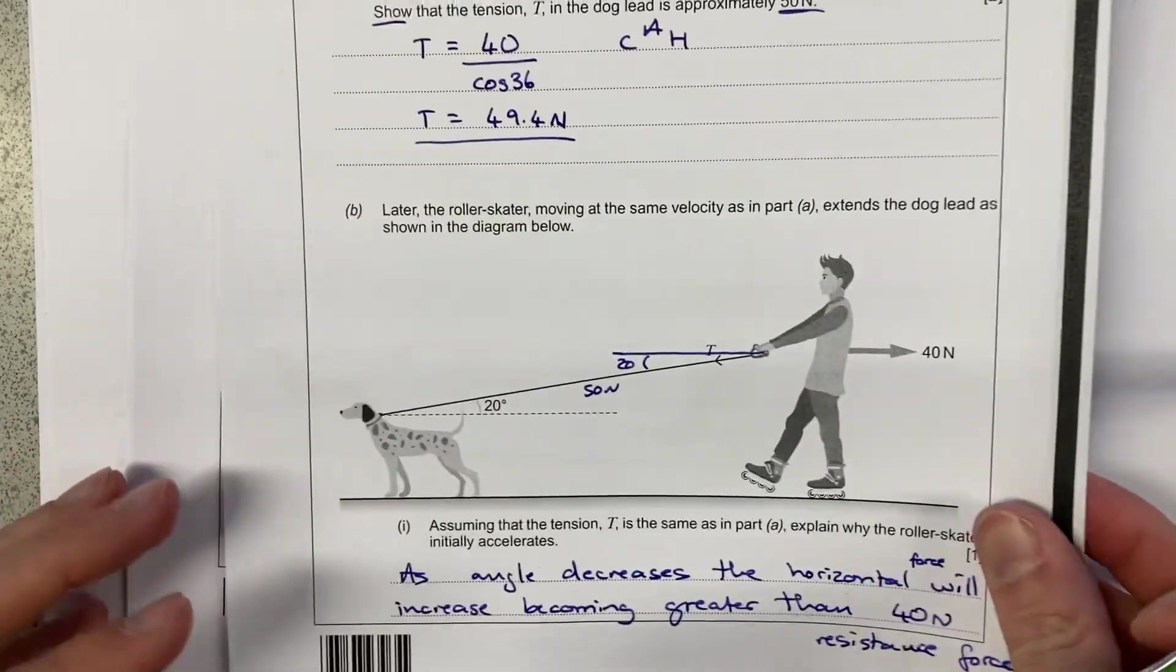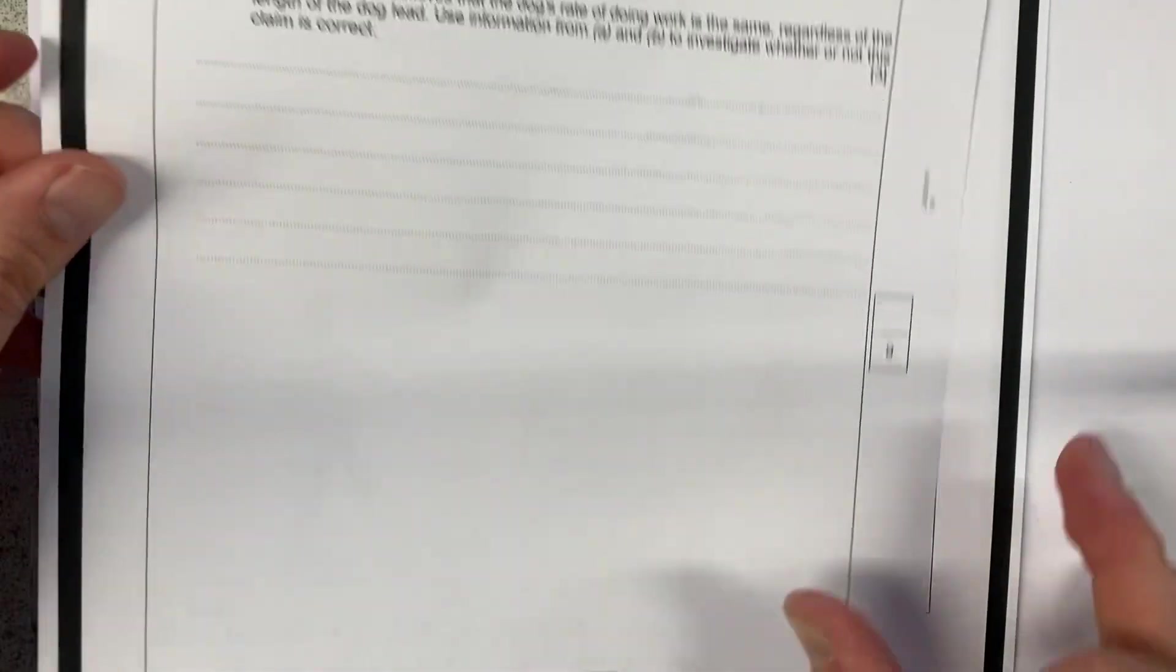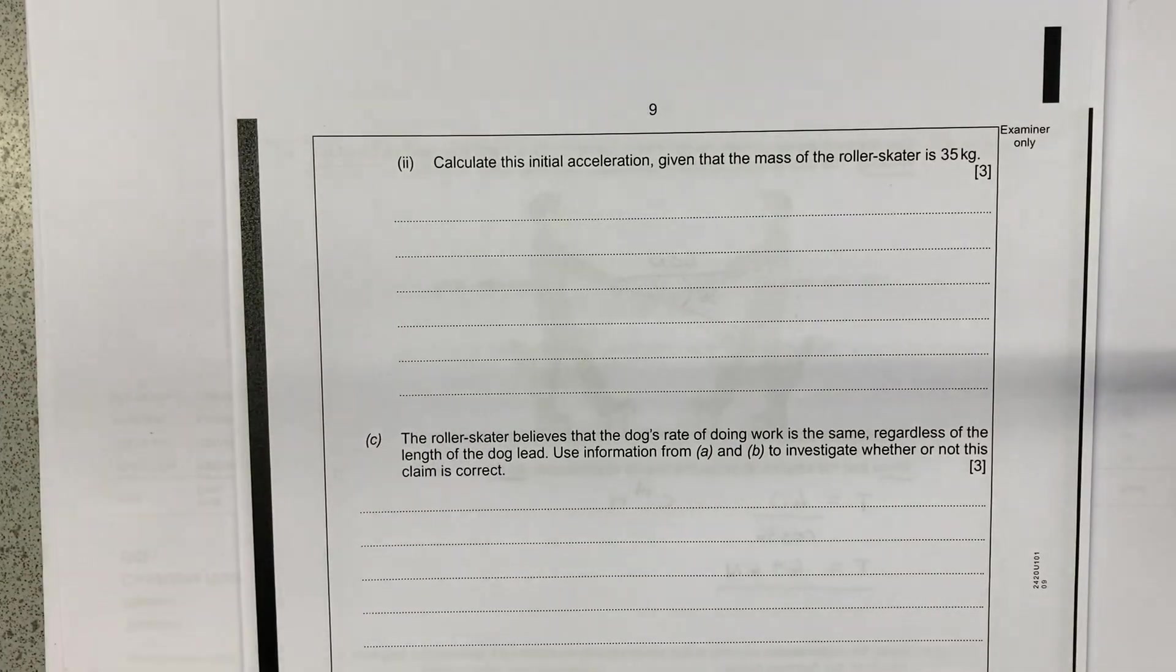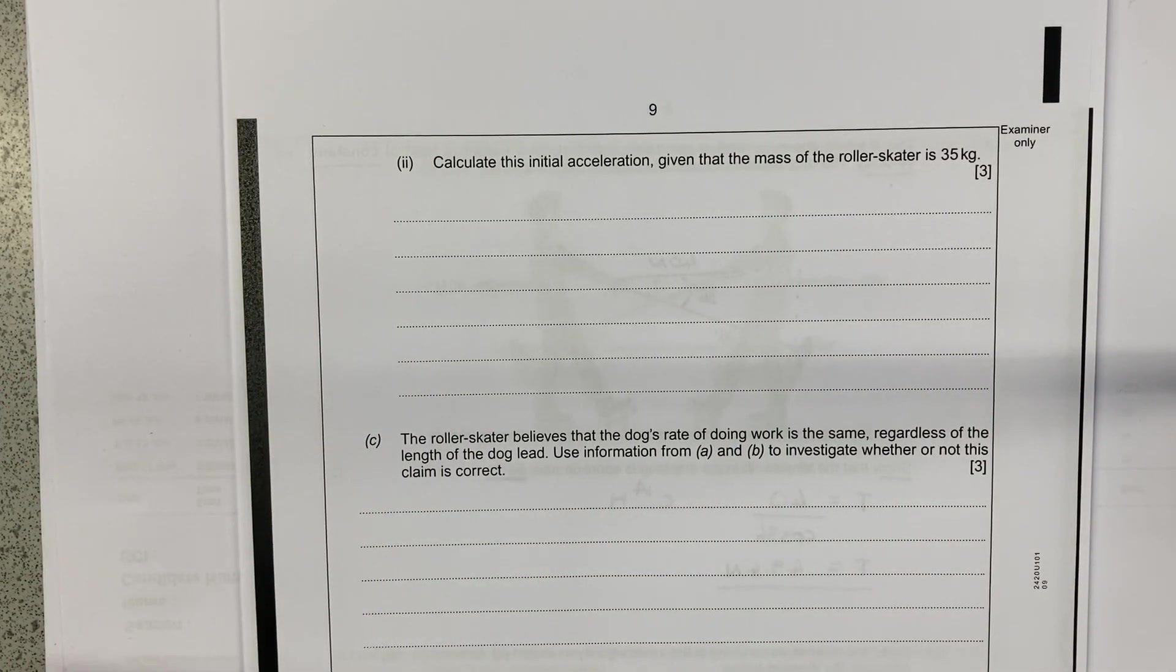At some point in the future, they're probably going to reach equilibrium again. So it then says, calculate this initial acceleration, given that the mass of the roller skater is 35 newtons.